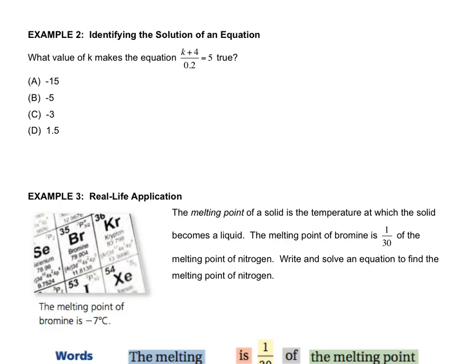This next example asks us to identify the solution of an equation. We'll learn how to solve this type of multi-step equation in a coming lesson very shortly. For now, we're actually going to use the answer choices given below. We have four choices and hopefully one is correct — this is a multi-step equation we'll cover in the next couple of lessons. The strategy is to plug in each answer and see which one works.